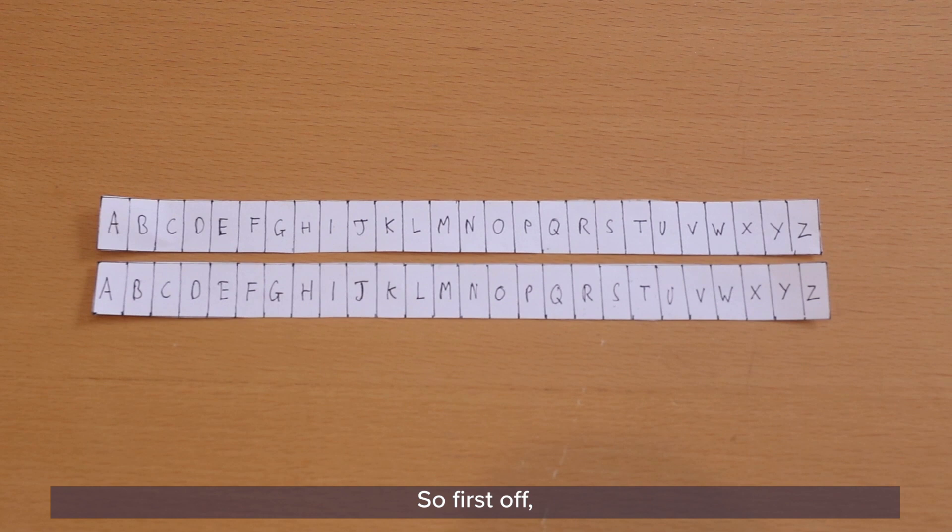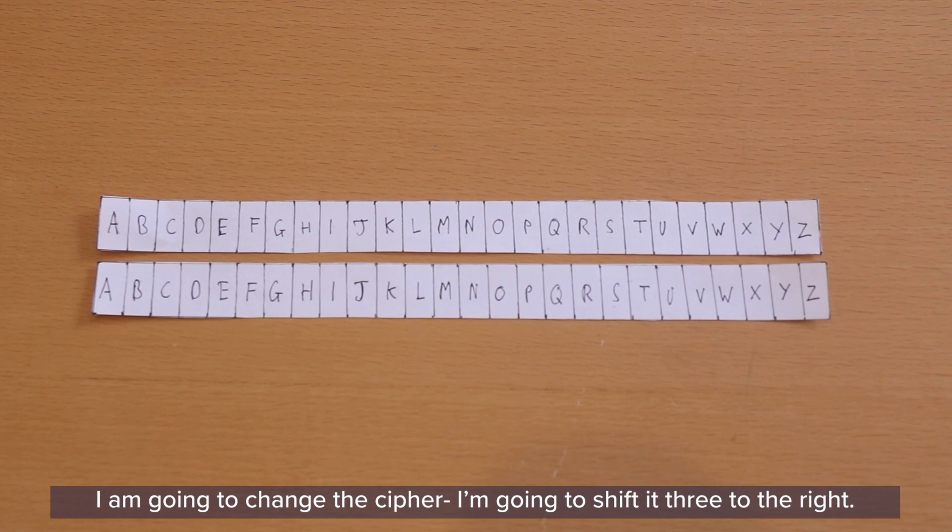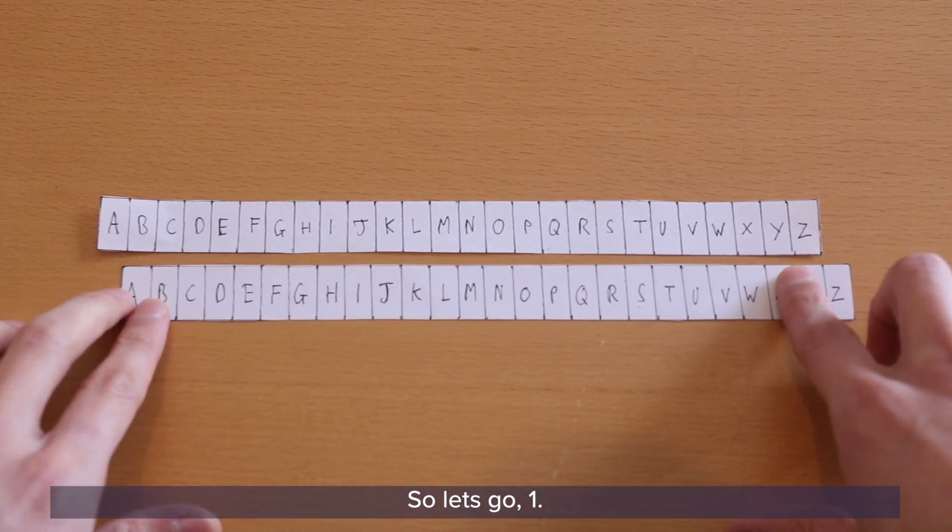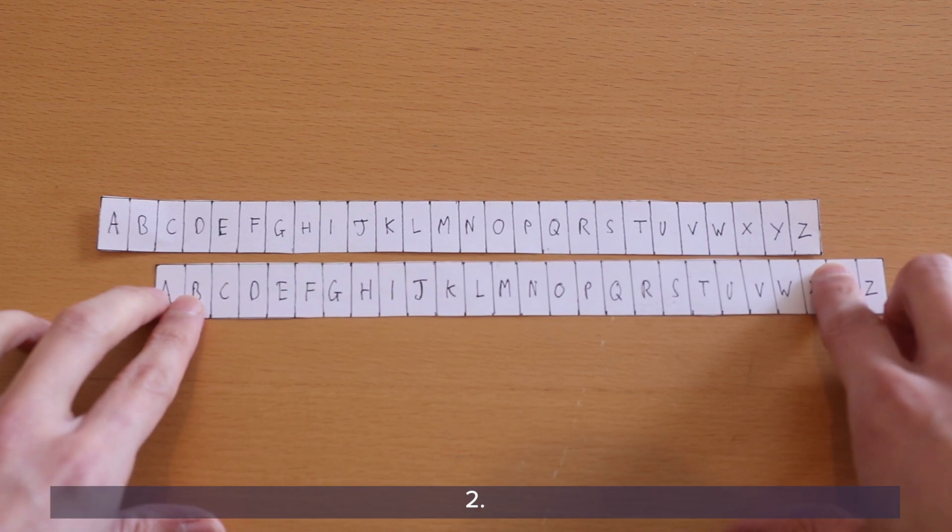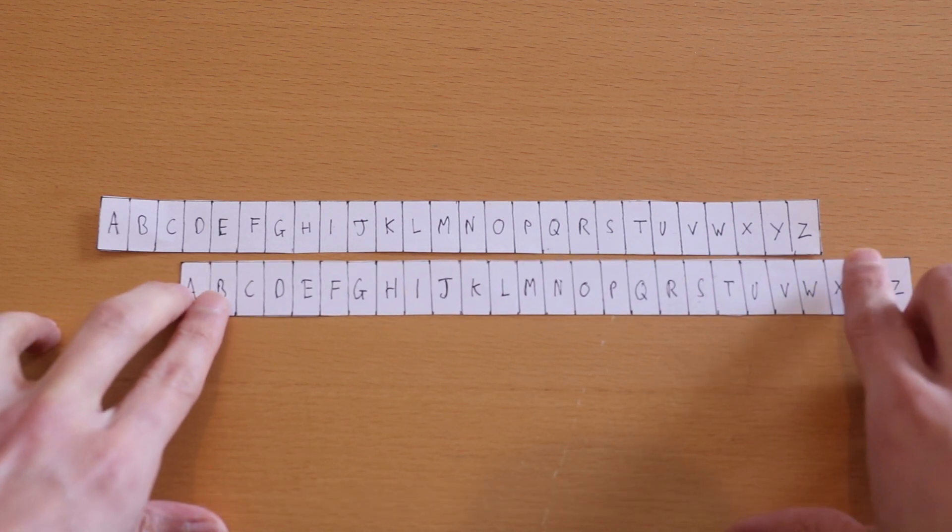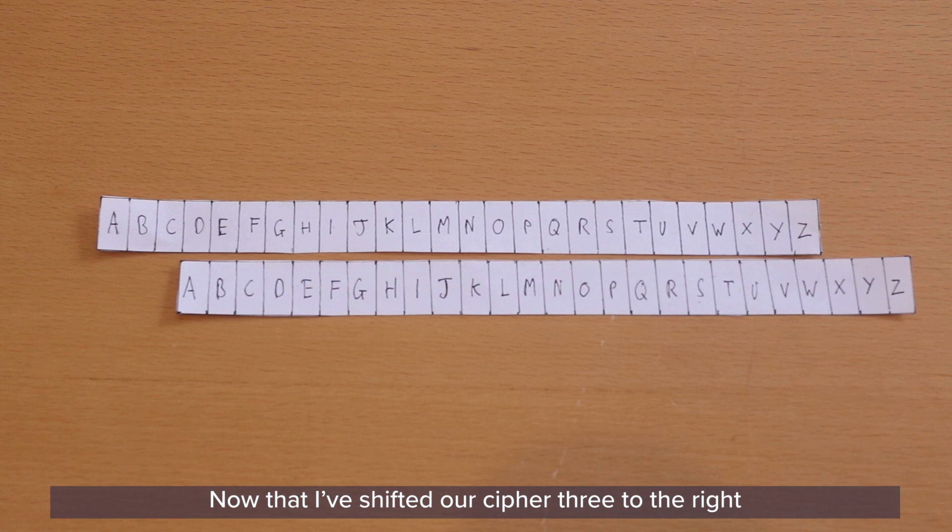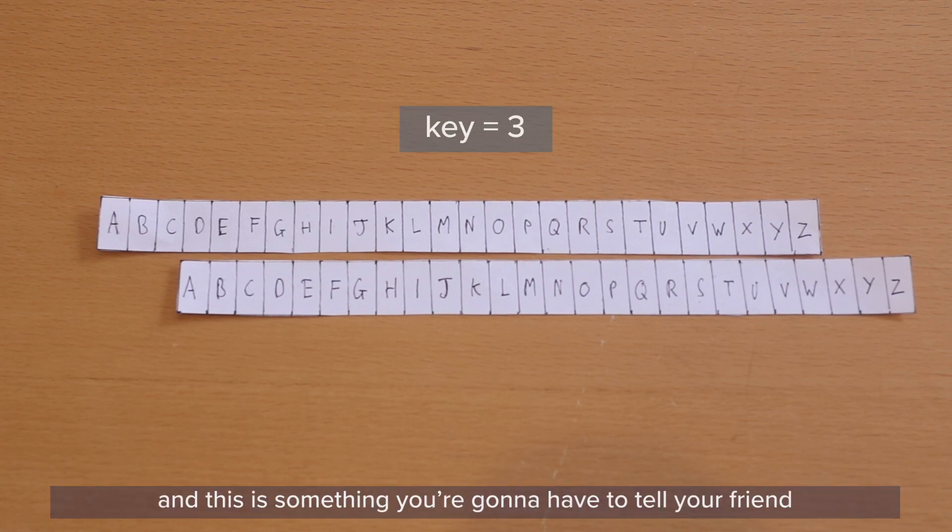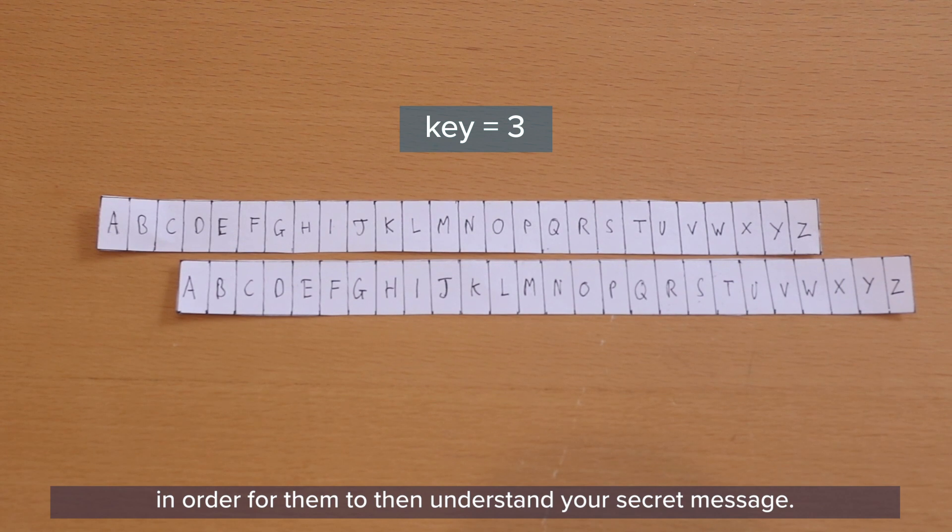So first off, I am going to change the cipher. I'm going to shift it three to the right. So let's go one, two, three. Now that I've shifted our cipher three to the right, I would say then the key to our secret code is the number three. And this is something you're going to have to tell your friend in order for them to then understand your secret message.